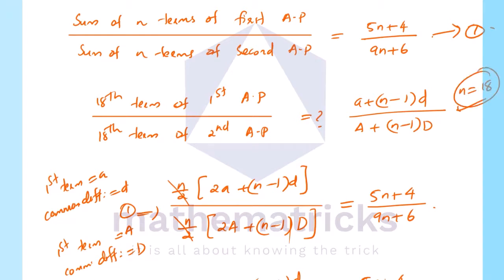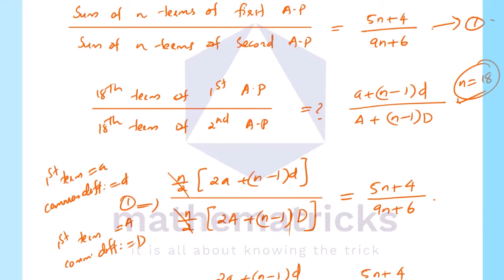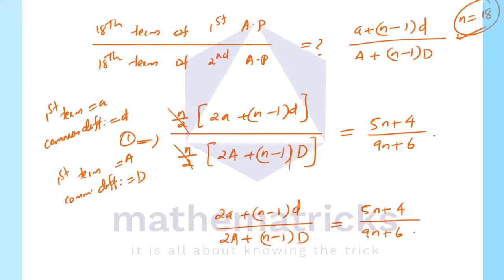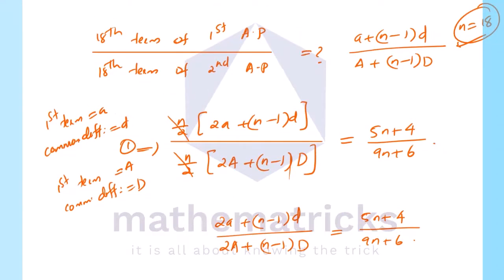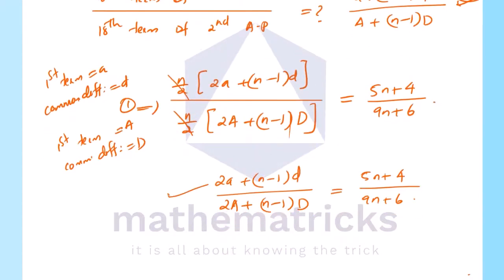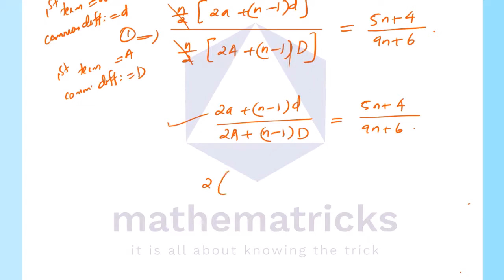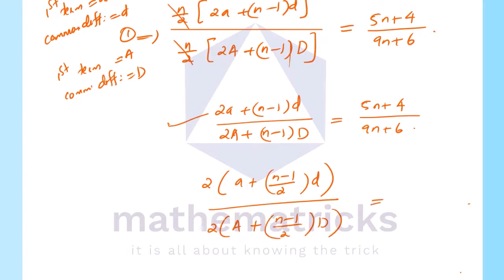Looking at the numerator 2a plus n minus 1 into d, we take 2 outside to get 2 into a plus (n minus 1 by 2) into d. Similarly for the denominator: 2 into A plus (n minus 1 by 2) into D. The 2 and 2 cancel, giving a plus (n minus 1 by 2) into d divided by A plus (n minus 1 by 2) into D, equal to 5n plus 4 divided by 9n plus 6.